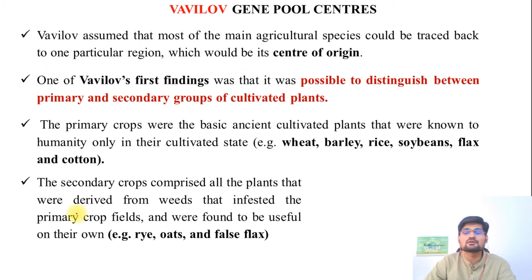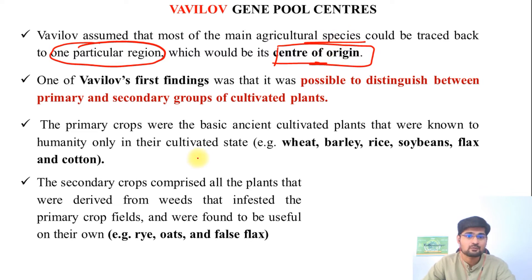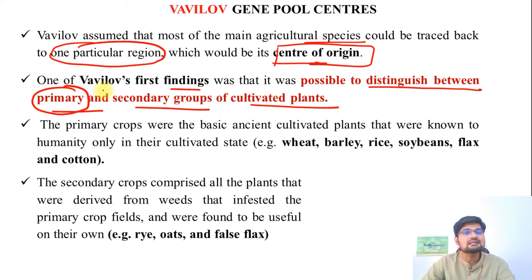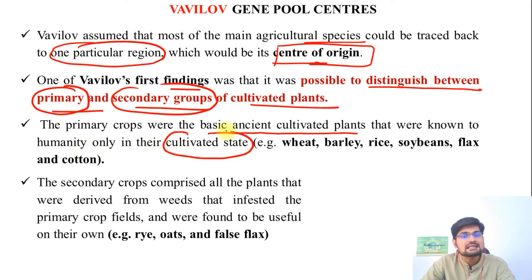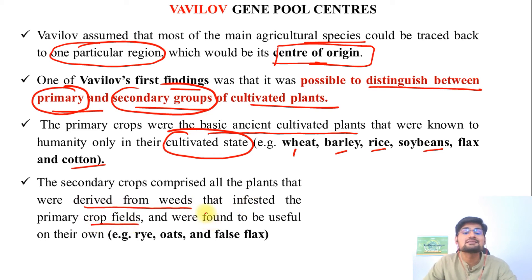Vavilov assumed that most major agricultural species could be traced back to one particular region — their center of origin. One of his first findings was that it was possible to distinguish between primary and secondary groups of cultivated plants. Primary crops were the basic ancient cultivated plants known to humanity only in their cultivated state — wheat, barley, rice, soybean, flax, and cotton. Secondary crops comprised plants derived from weeds that infested primary crop fields and were found useful — rye, oats, and false flax among others.